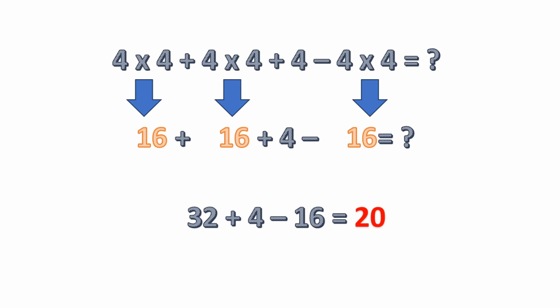We have several 4 times 4s here — we have 4 times 4, 4 times 4, and a 4 times 4. If we solve those, we end up with 16 plus 16 plus 4, and then we have a minus 16. Remember, we have that minus sign — we're subtracting 4 times 4. So that leaves us with 32 plus 4 minus 16, which equals 20. The answer is 20.